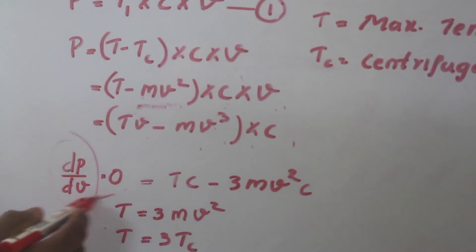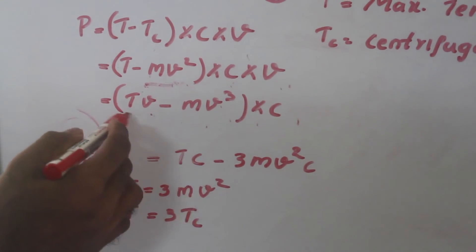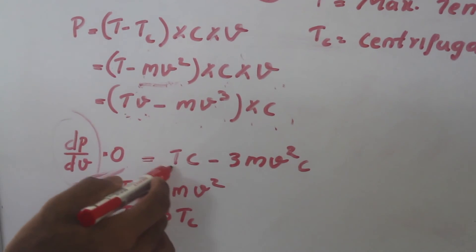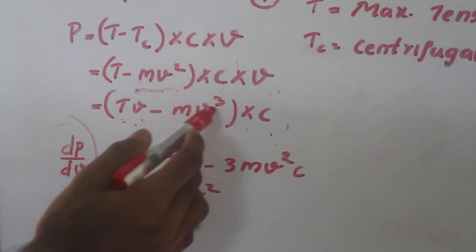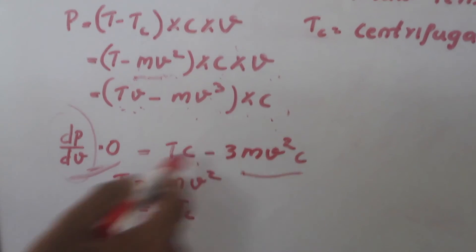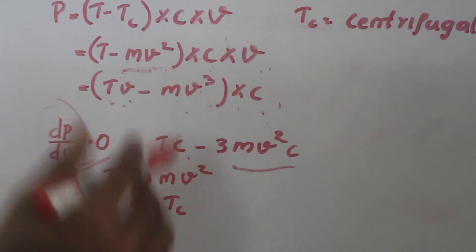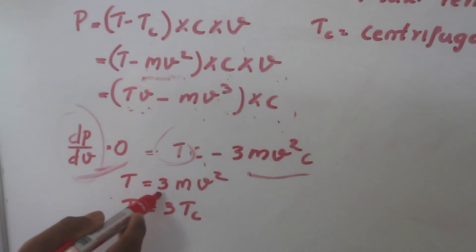By differentiating this, Tvc converts to Tc, and m v cubed c converts to 3m v squared c. From here we will get that T is equal to 3m v squared.